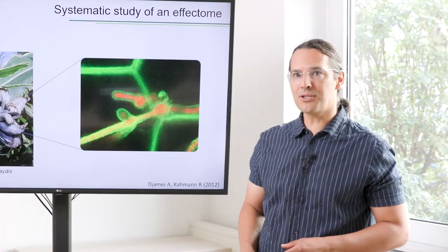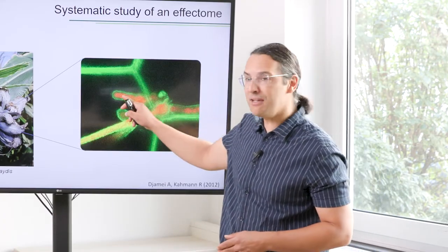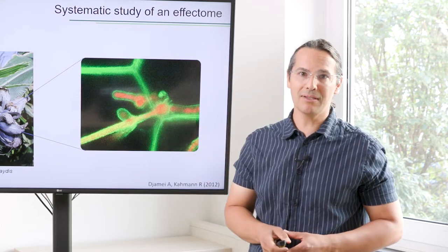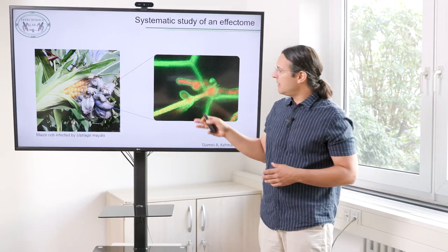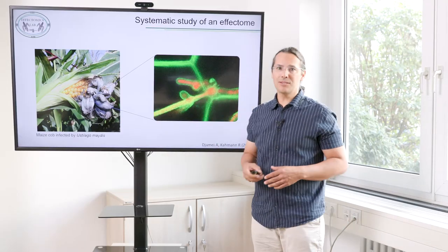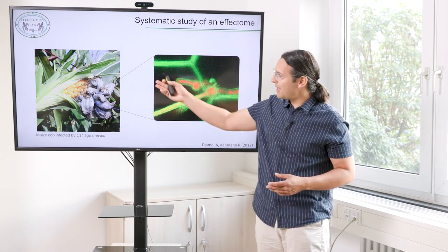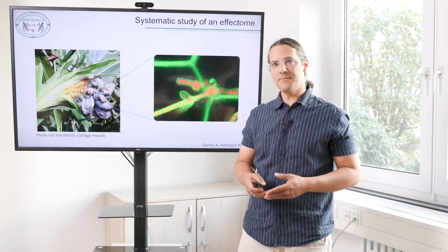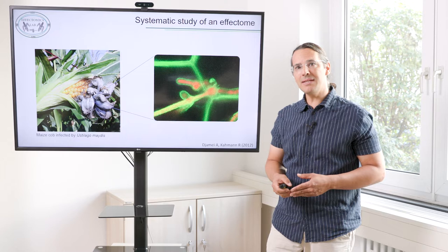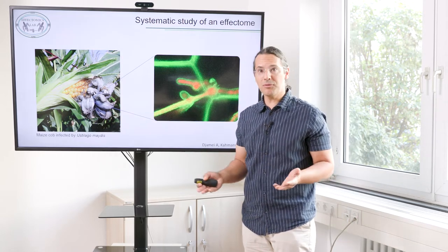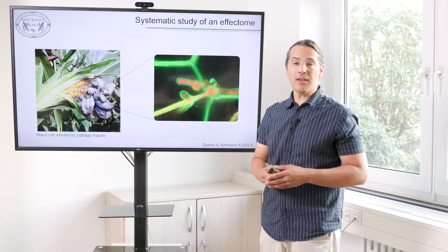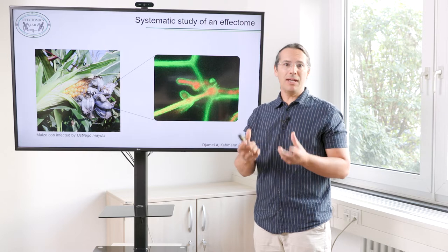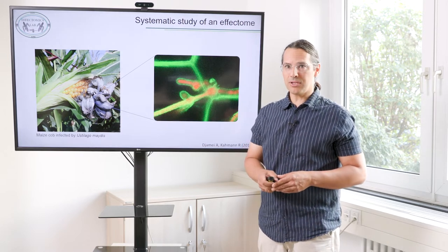If you zoom into this interaction, you see here in red the fungal hyphae and in green the plasma membrane of the host plant. It's becoming obvious that this fungus needs to control this interaction in order to manipulate the host, and this is done with the help of effector molecules. Effectors are basically molecules — among them proteins, but also RNAs and other molecules — which are able to manipulate the host plant in favour of the pathogen.